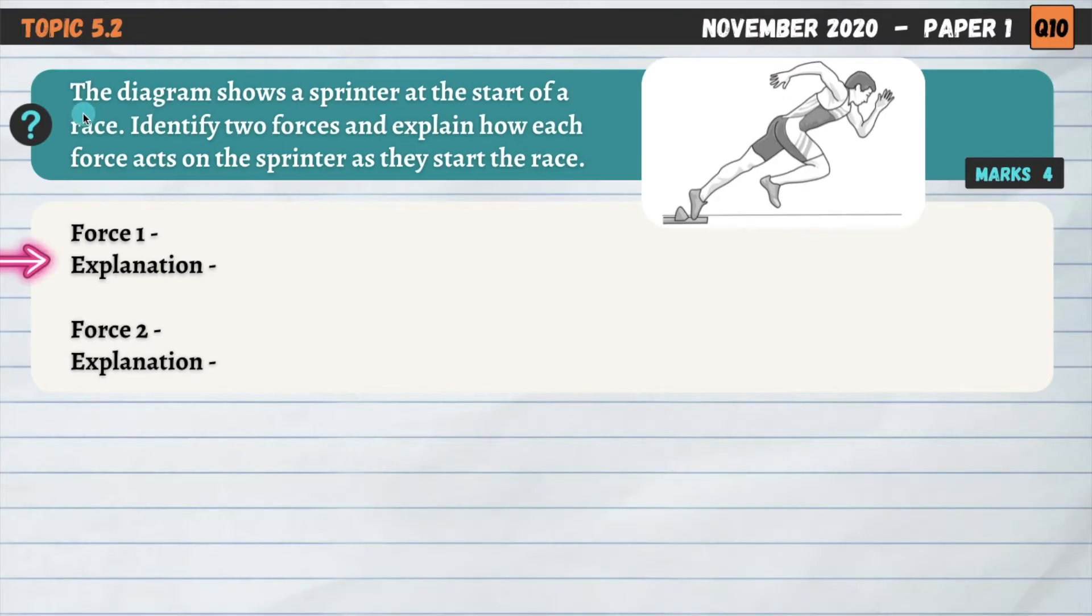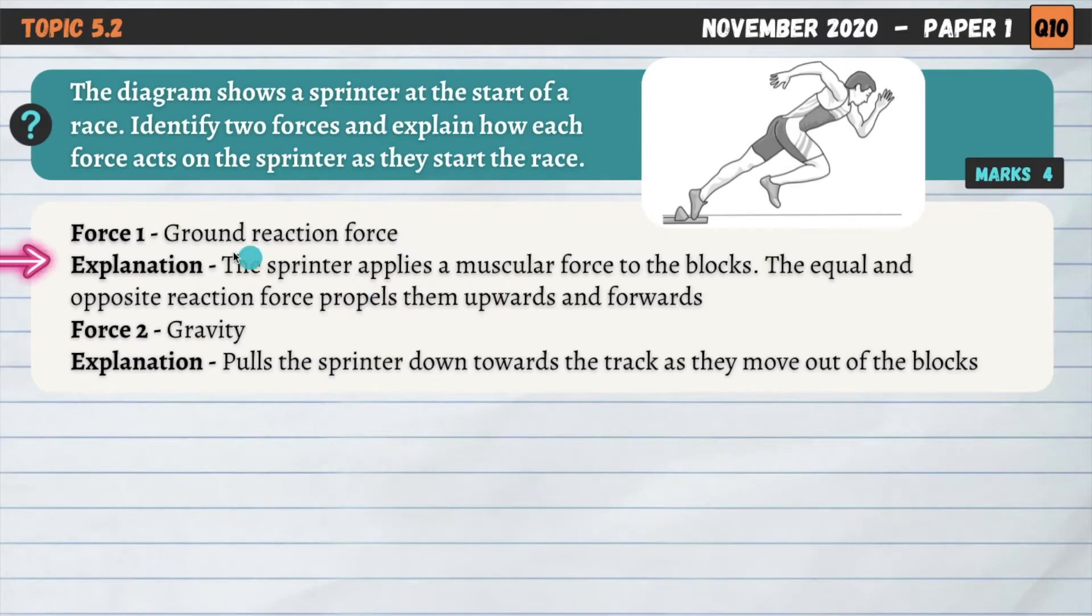Moving on. Topic 5.2 here as well. The diagram shows a sprinter at the start of a race. Identify two forces and explain how each force acts on the sprinter as they start the race. So again, a very similar question to the one that we just looked at, but another scenario here for a sprinter coming out of the starting blocks. So two forces acting upon the sprinter. We've gone for ground reaction force here and gravity. So some different forces from the ones that we looked at in the previous question. So ground reaction force, how does it act on the sprinter? Well, the sprinter applies a muscular force to the blocks. They're going to push down against the blocks. And the equal and opposite ground reaction force that comes from the blocks and acts back against the sprinter in this direction propels them forwards and upwards.